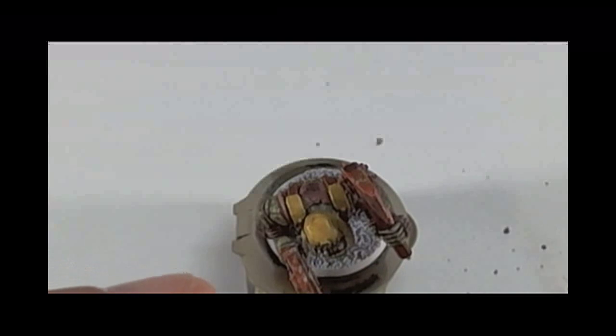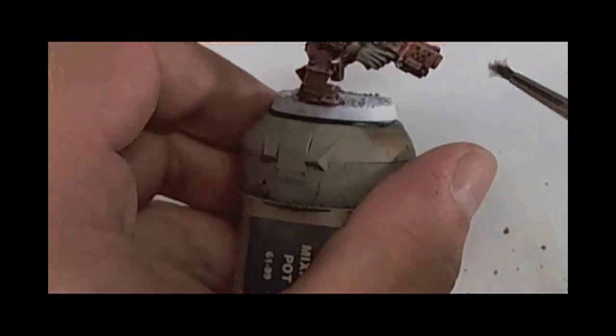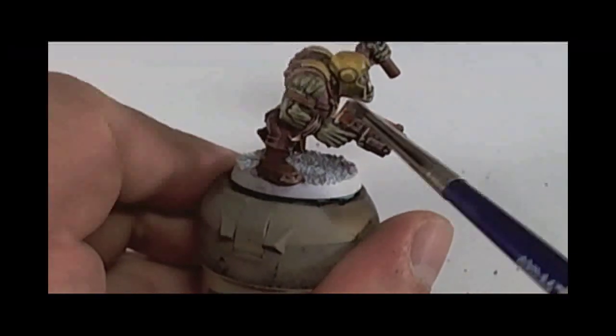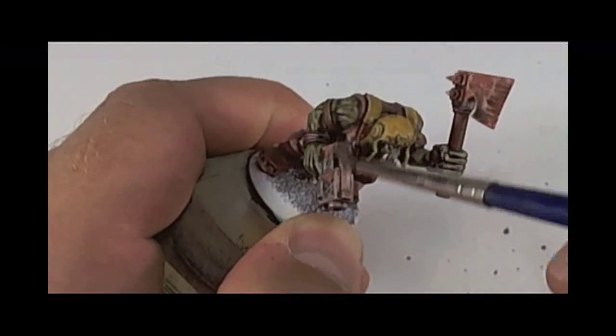Next step we'll be using Pig Iron, which is the same as Bolt Gun Metal. And we'll dry brush it over all the metal areas we've stippled earlier with orange and brown.